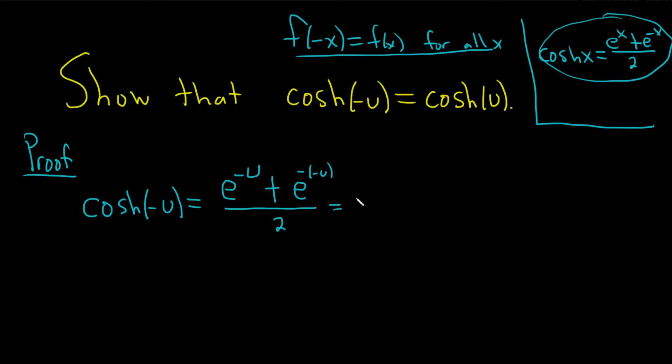I'm showing an extra step here. So this is e to the negative u plus e to the u over 2. And now we can just rearrange these. This is really e to the u plus e to the negative u over 2.